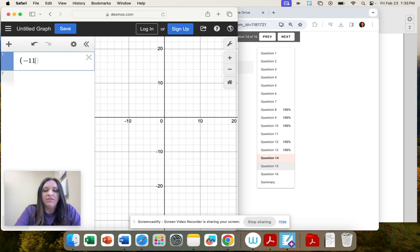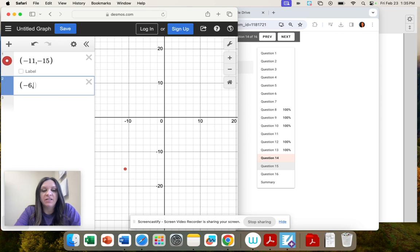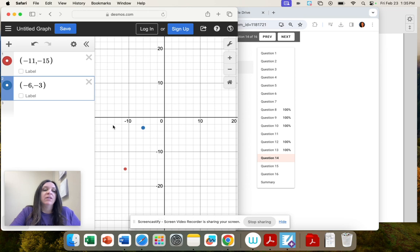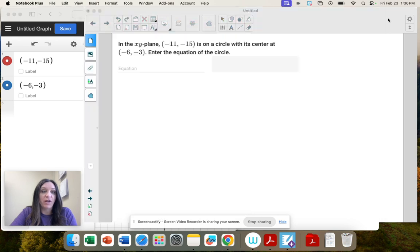So negative 11, negative 15, negative 6, negative 3. All negatives. So here's the center and then here's a point on the circle. So the distance between those points is the radius.